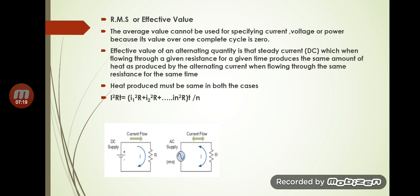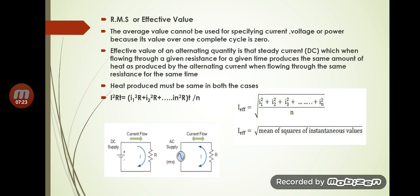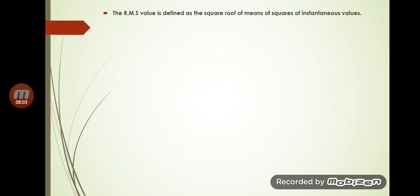If these two are equal, R and T cancel, giving: I² = (I1² + I2² + ... + IN²) / N. Therefore, the effective or RMS current equals the square root of (I1² + I2² + ... + IN²) / N — the square root of the mean of the squares of all instantaneous current values. This is why RMS stands for root mean square.